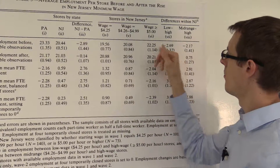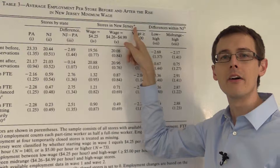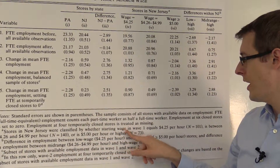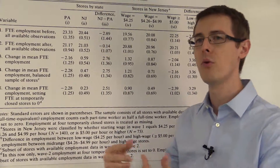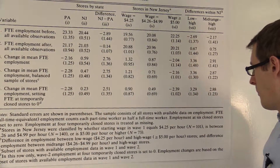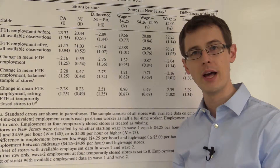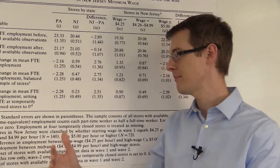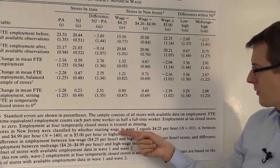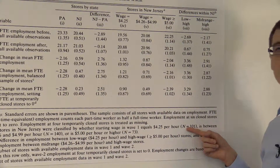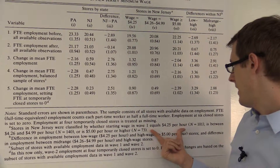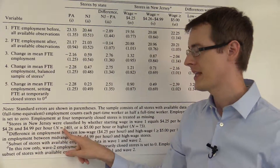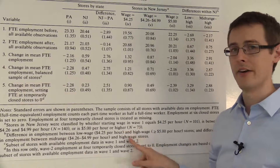Now what's going on over here in this next section? Stores in New Jersey were classified by whether their starting wage in wave one — before the policy changed — equaled $4.25 an hour (101 stores), was between $4.26 and $4.99 per hour (140 stores), or was $5.00 an hour or higher (73 stores).